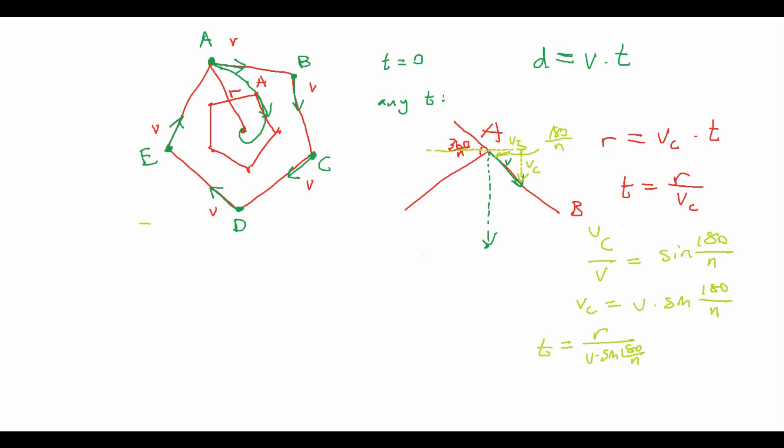So we have T is equal to R over V times sine of 180 over n. And this is good, because now we have T. So what remains is to find D. D is equal to V times T, as we noticed before. And we also have T is R over V times sine of 180 over n. So after we plug that in, we see that the two Vs cancel out. And we're left with D equals R over sine of 180 over n. And we are done.